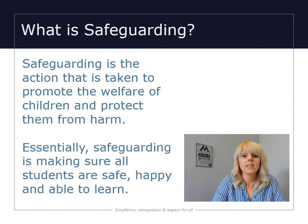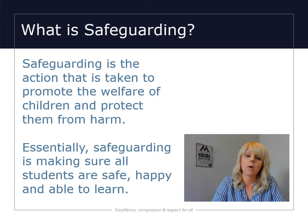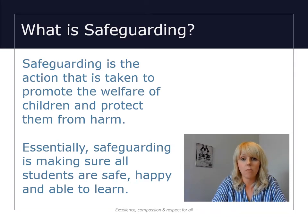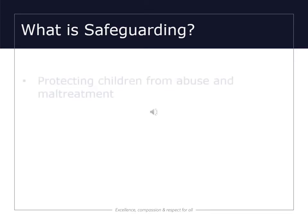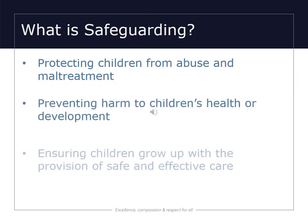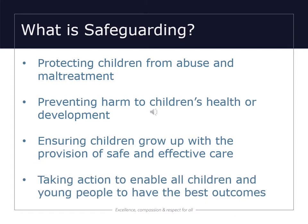The first thing we're going to talk about is the definition of safeguarding. Safeguarding is the action taken to promote the welfare of children and protect them from harm. Essentially it is making sure all students are safe, happy, and able to learn. It also means protecting children from abuse and maltreatment, preventing harm to children's health or development, ensuring children grow up with safe and effective care, and taking action to enable all children and young people to have the best outcomes possible.